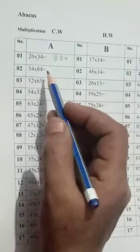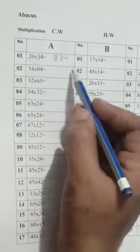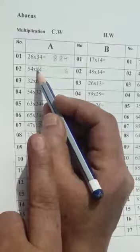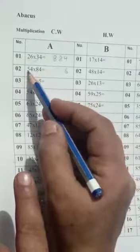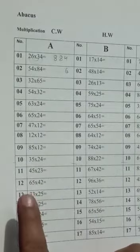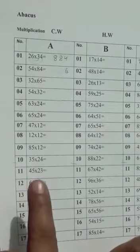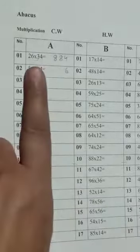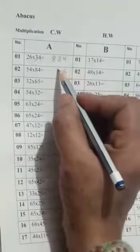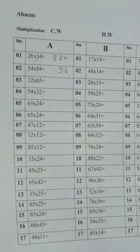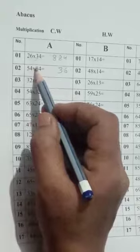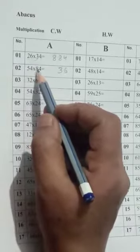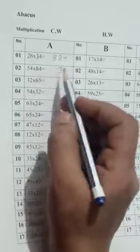One more question: four fours are 16 — write 6, carry 1. Four eights are 32. Four fives are 20, plus 32 is 52, plus 1 carry is 53 — write 3, carry 5. Tens digit: eight fives are 40, plus 5 is 45.